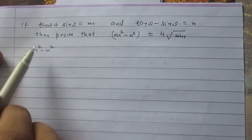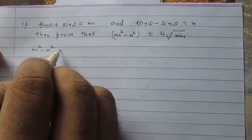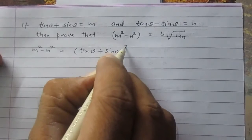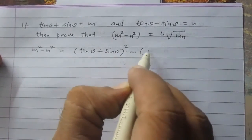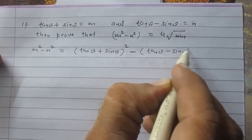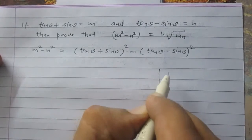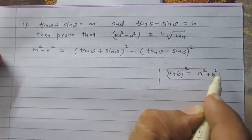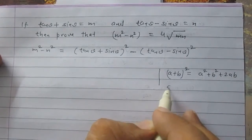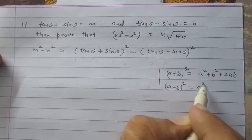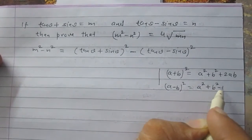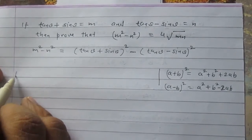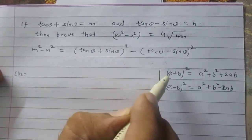On substituting the values of m and n in m² - n², we get m² - n² = (tan θ + sin θ)² - (tan θ - sin θ)². Using the identity (a + b)² = a² + b² + 2ab and the identity (a - b)² = a² + b² - 2ab, the left hand side can be expanded.